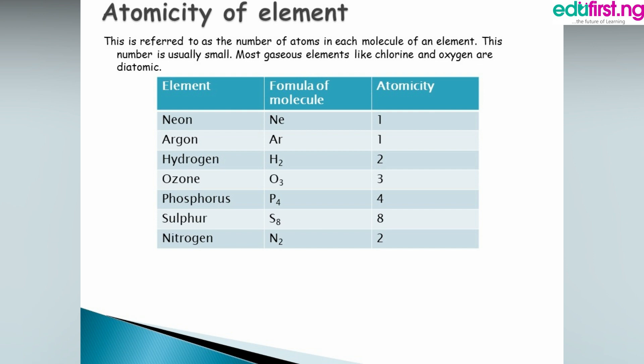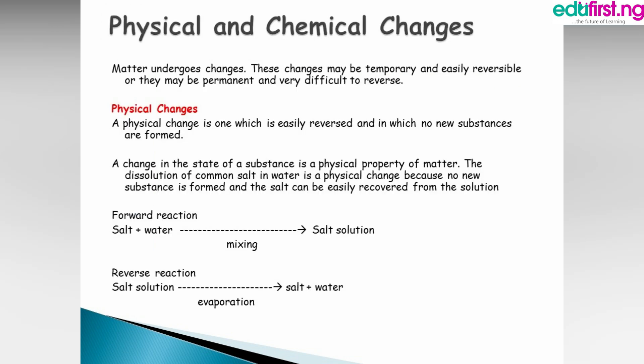You can work out the atomicity of the first 20 or 30 elements yourself, as long as you know their symbols. Now let's move to physical and chemical changes. Matter undergoes changes that may be temporary and easily reversible, or permanent and very difficult to reverse. A physical change is one which is easily reversed and in which no new substances are formed.